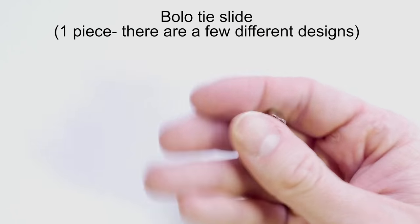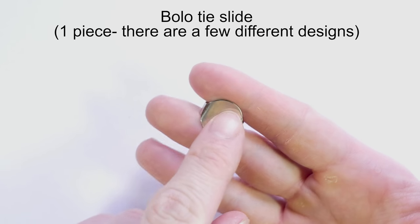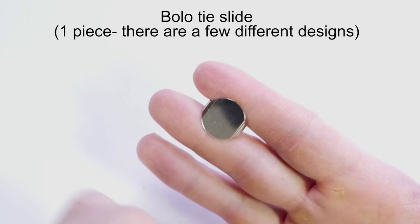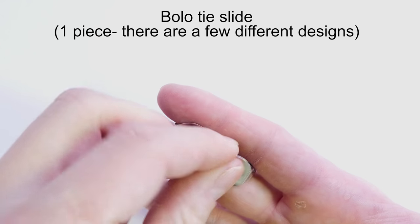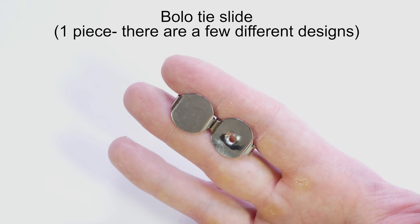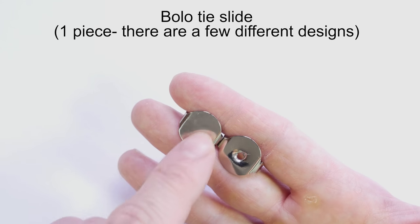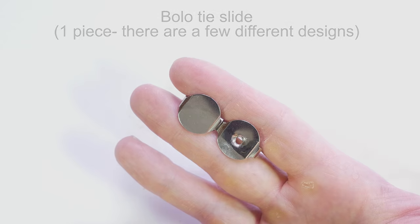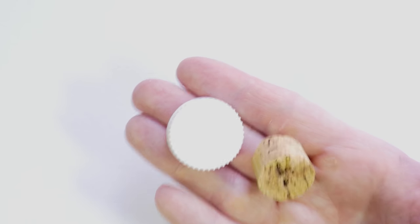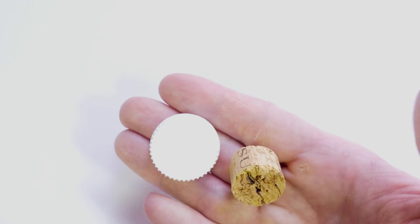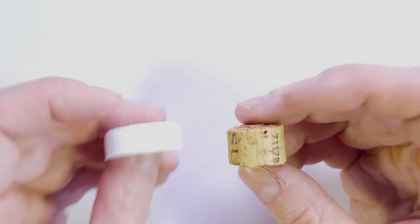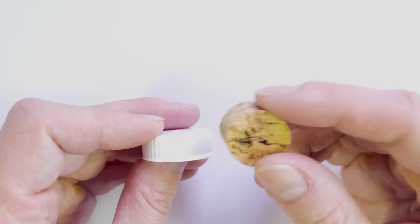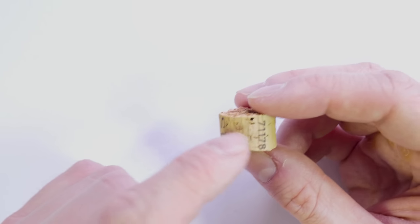The bolo tie slides usually come either like this or with a drilled hole. If you don't have the hole drilled in, you're going to need to drill one. You can also improvise the bolo tie slide by drilling a couple of holes either in a plastic cap or a wine cork.